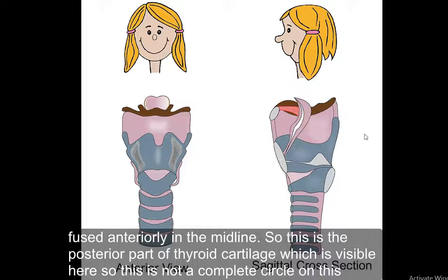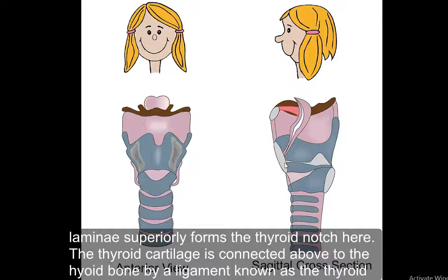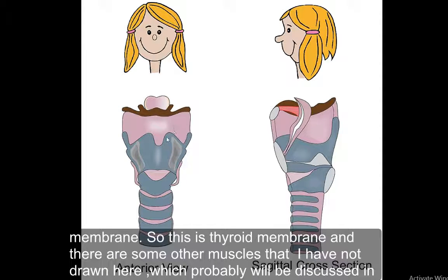The posterior part of the thyroid cartilage is visible here — it is not a complete circle on the posterior side, but as it comes forward anteriorly, the two laminae fuse together. The incomplete fusion of the two laminae superiorly forms the thyroid notch. The thyroid cartilage is connected above to the hyoid bone by a ligament known as the thyrohyoid membrane.